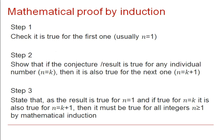Just to summarise then, these are the three steps in mathematical proof by induction. Step 1: Check it's true for the first one. Usually we use n equals 1 but there may be some questions when you would prefer to use n equals 2 or a slightly higher value. Step 2: Show that if the conjecture result is true for any individual number, say n equals k, then it's also true for the next one n equals k plus 1.